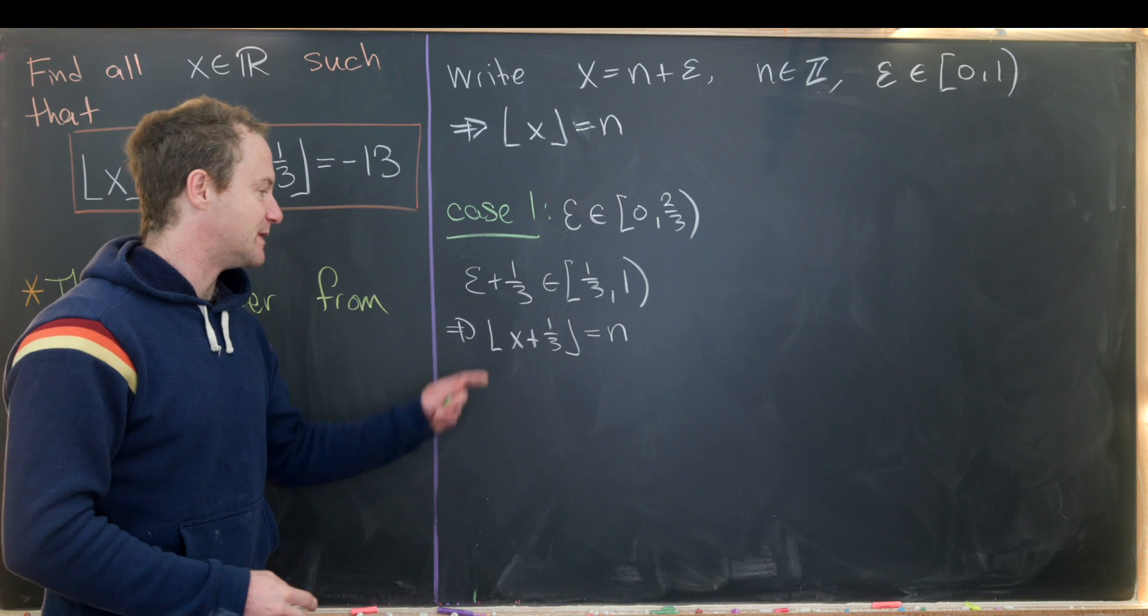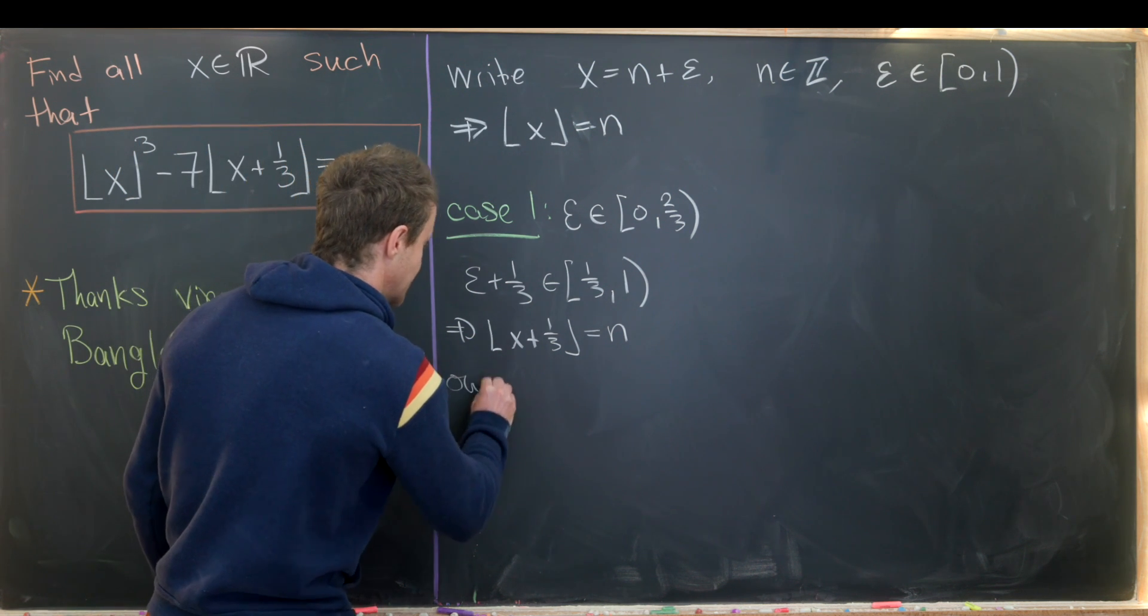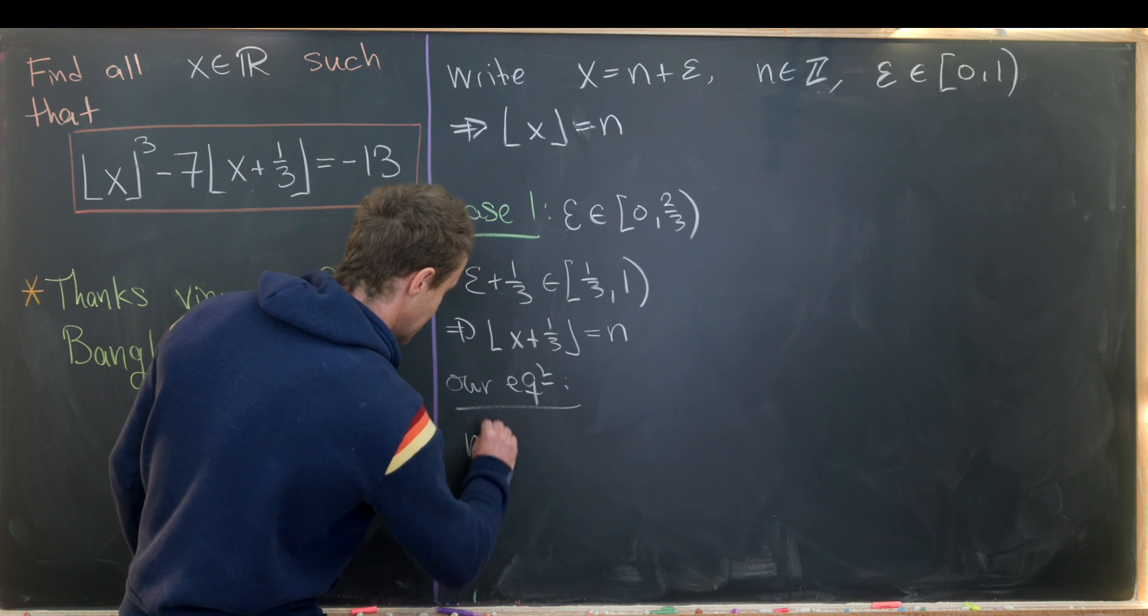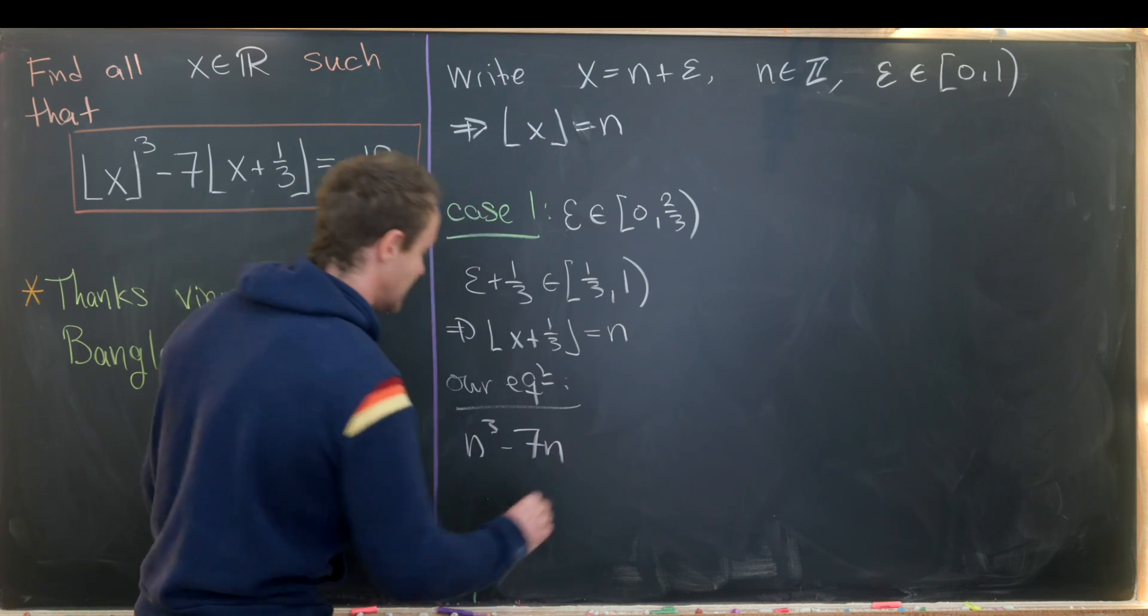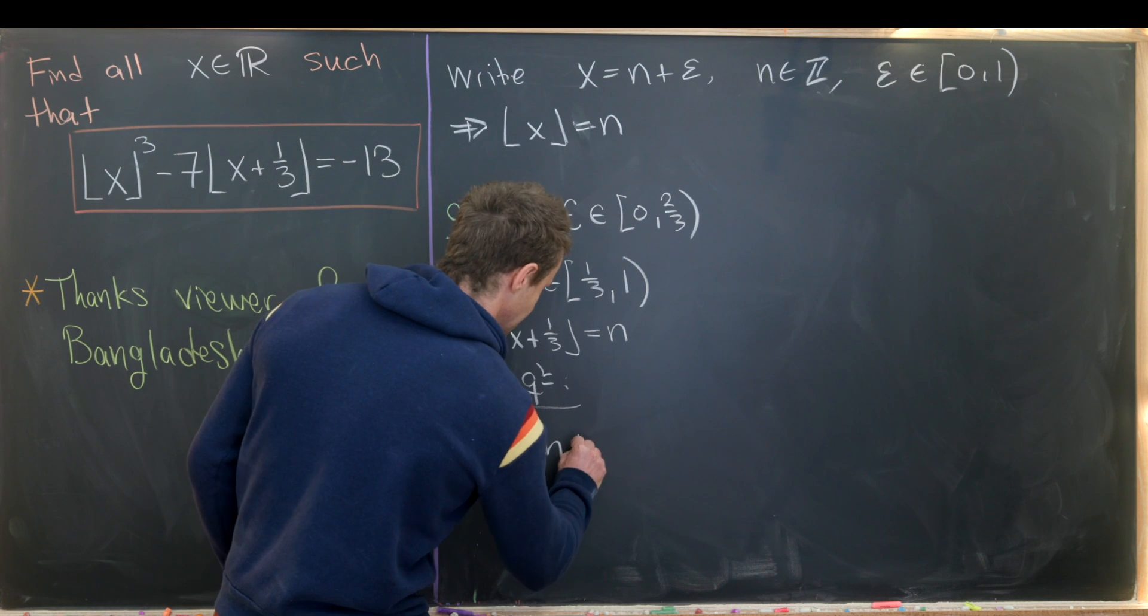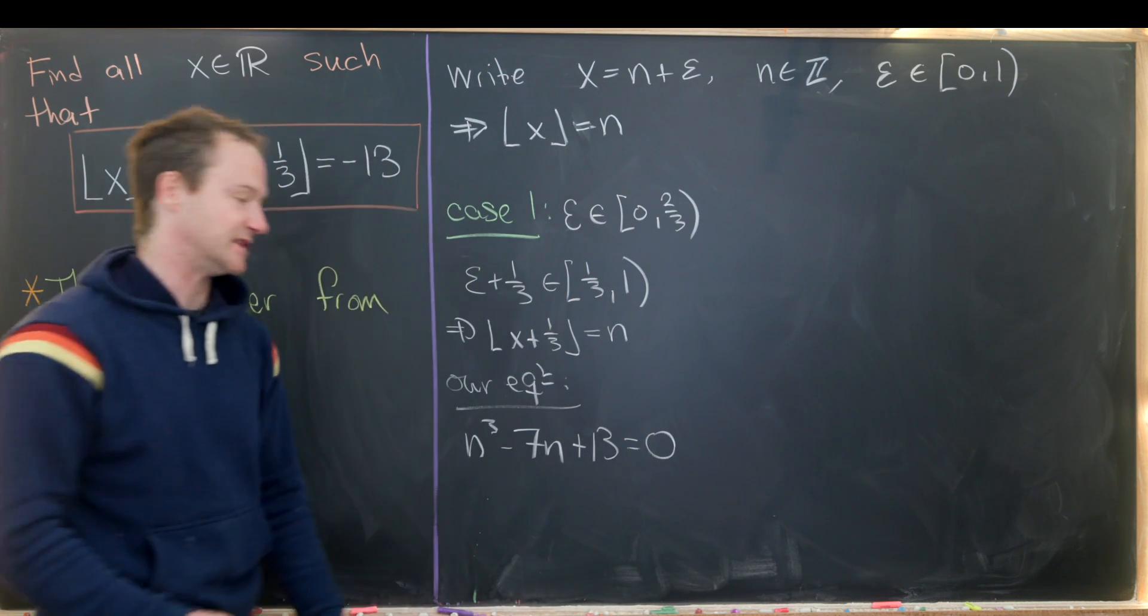Okay, but now in this case, our equation simplifies very nicely to n cubed minus 7n equals negative 13. But I'm going to move that 13 over and write it as plus 13 equals 0.